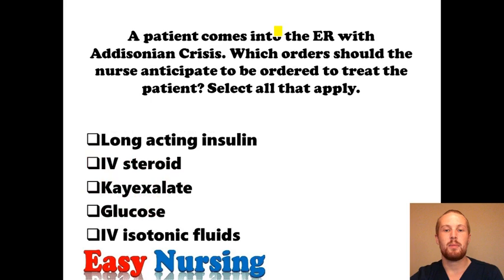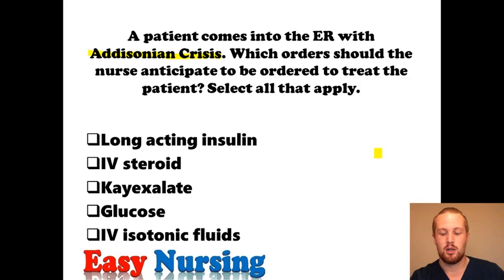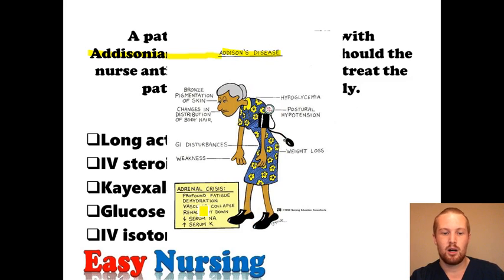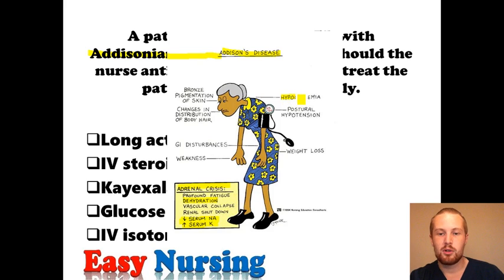You have a patient that comes into the ER with Addisonian crisis. Addisonian crisis is like Addison's except it's an emergent crisis — low aldosterone, low cortisol, low androgens, but to the extreme and the body can't compensate. What orders would the nurse anticipate to treat the patient? With adrenal crisis, low aldosterone means high potassium and low sodium — you want to treat that potassium because it puts you at risk for cardiac dysrhythmias. You'll also have severe dehydration because you have low aldosterone and are losing all your fluids. Remember, you're also going to have hypoglycemia with Addison's.